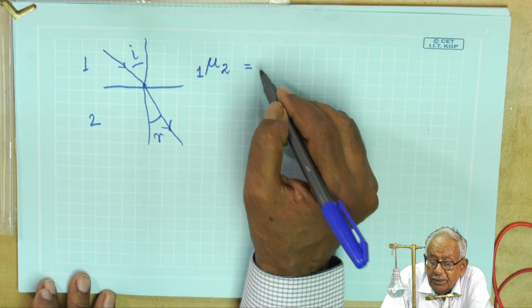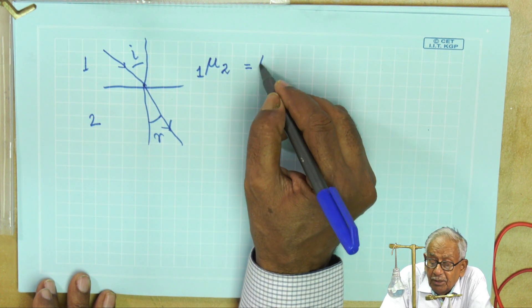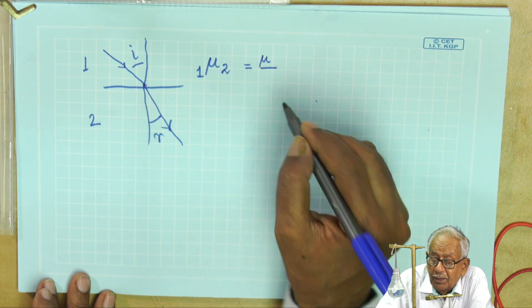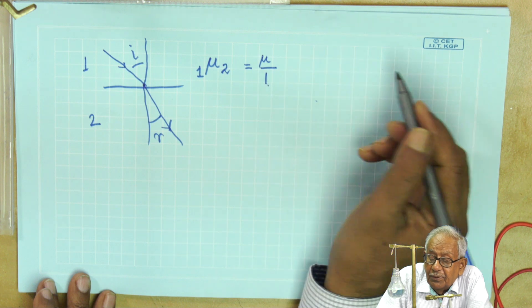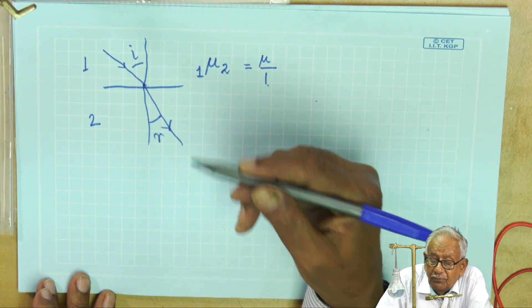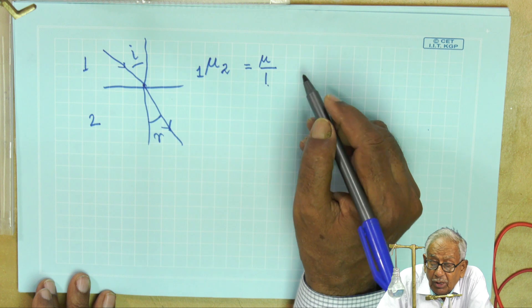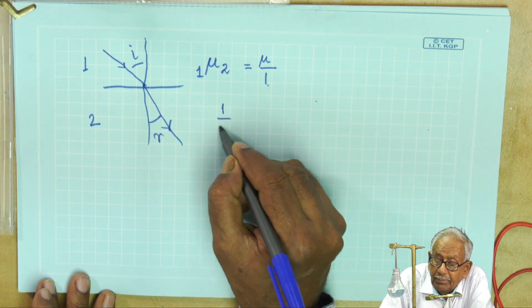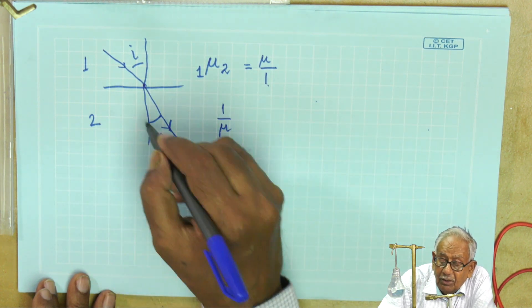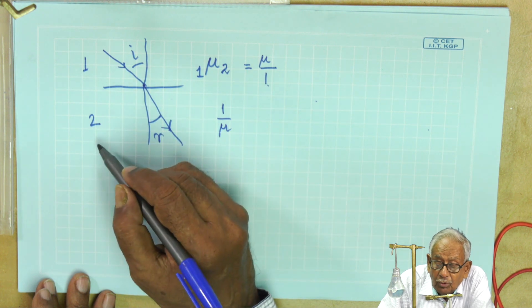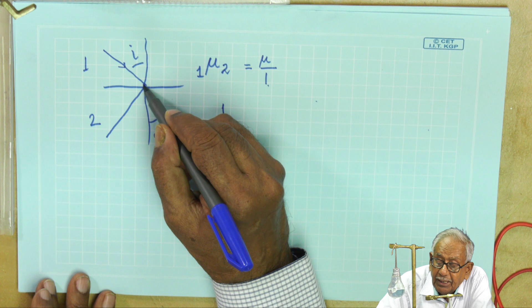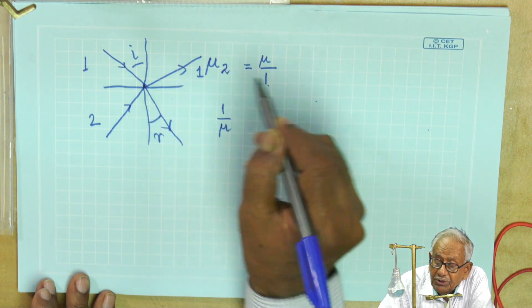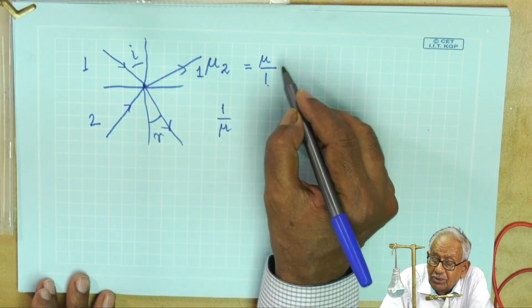Then we can write it that this is μ divided by 1 because air has a refractive index of 1. So it is the refractive index of the second medium. If we call it, then it should be 1 by μ, because the ray of light will now go from the denser medium to the rarer medium. So this relation we can change it in this way.